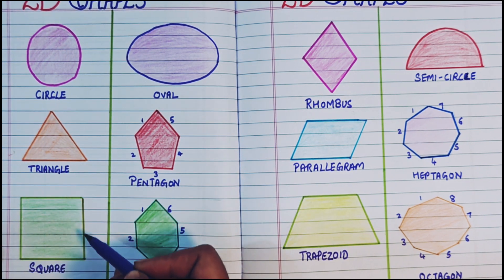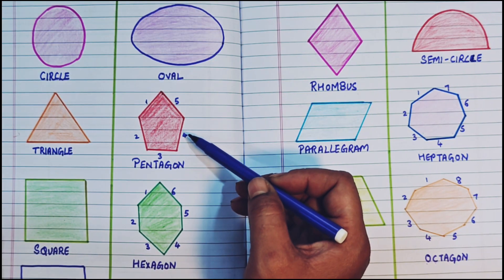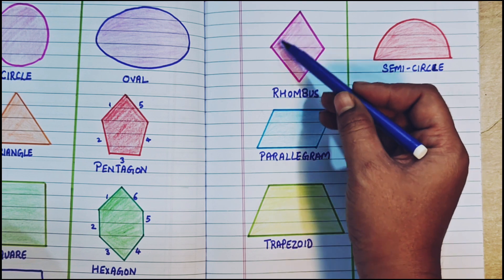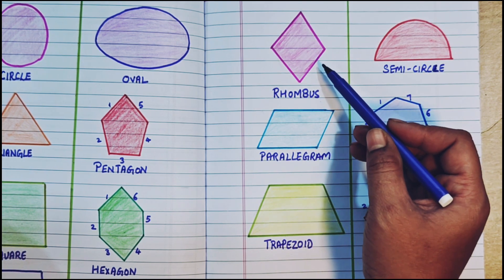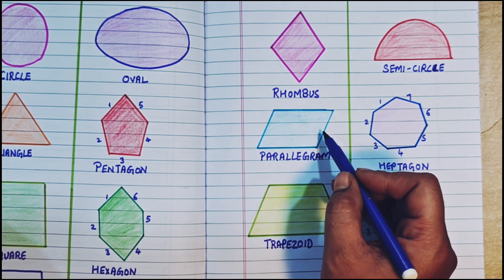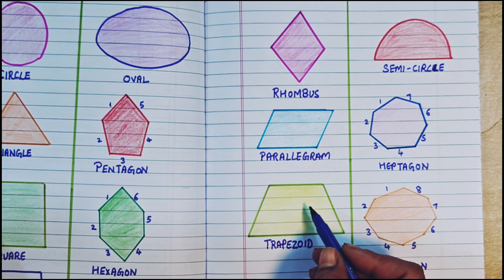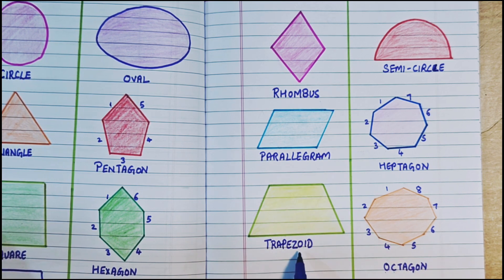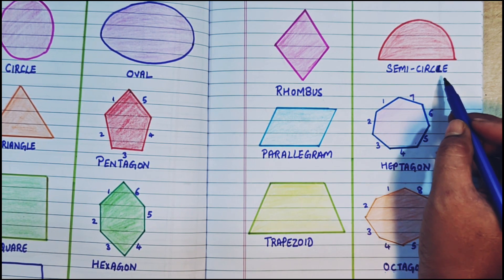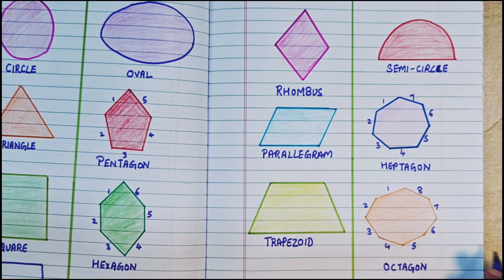Now once again let's revise them. Circle. Triangle. Square. Rectangle. Oval. Pentagon, having 5 sides. Hexagon, having 6 sides. Next, rhombus. It also has 4 sides but looks like a diamond. Next, parallelogram. When both the sides are parallel to each other, these 2 sides are parallel as well as these 2 sides are parallel to each other. Trapezoid, in this one side is small, one side is longer. Next, semicircle. It is half of the circle, so it is known as semicircle. Next, heptagon, having 7 sides. And next, octagon, having 8 sides.